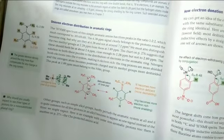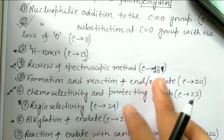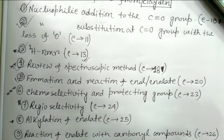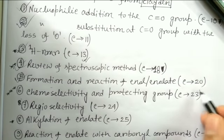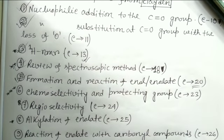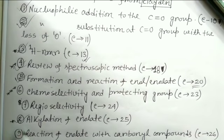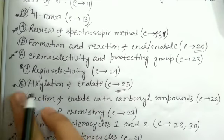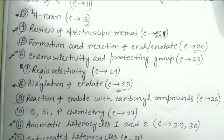The next chapter is the formation and reaction of enol and enolate - chapter number 20. Reading this chapter gives you a clear idea of how stable and unstable enolates are formed, their reactivity, how reactivity is affected by different conditions, and how they react with electrophiles. Related chapters are alkylation of enolate (chapter 25) and reaction of enolate with carbonyl compounds - basically the aldol and Claisen reactions (chapter 26). All three chapters cover enol and enolate chemistry and Clayden gives a very clear treatment of this.